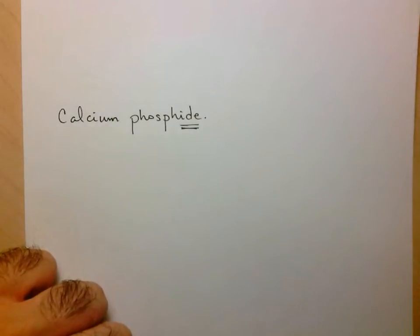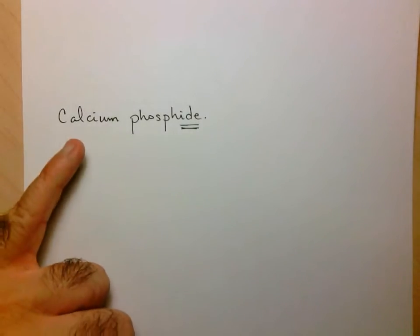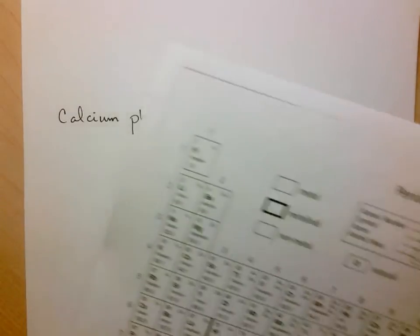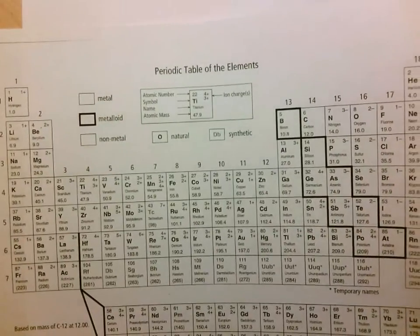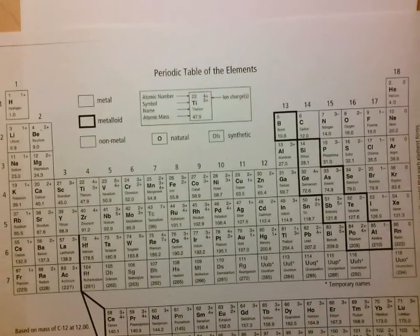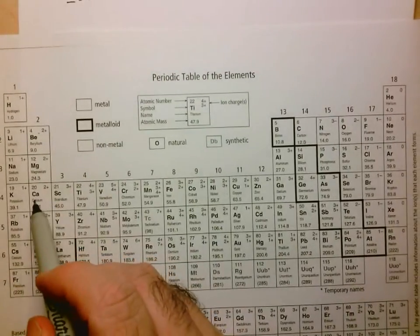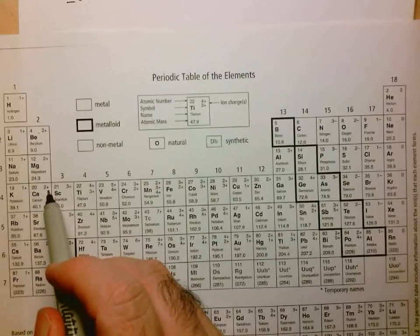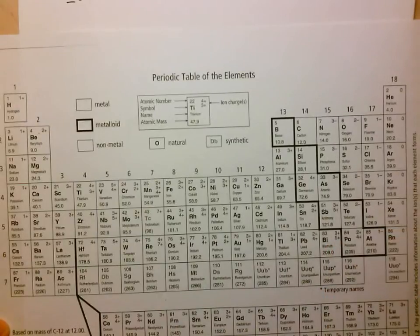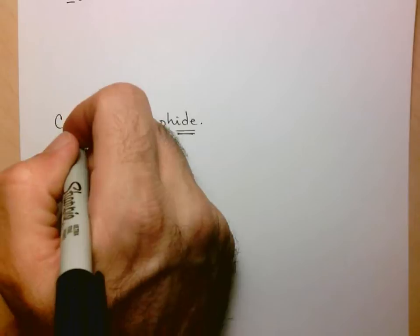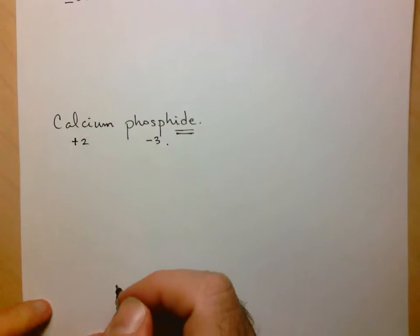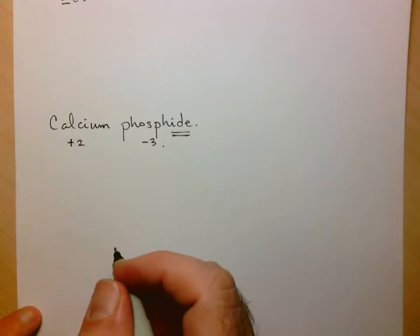Now we need to determine how many of each we need. The name doesn't tell us this, so we go to our periodic table. The first thing we look at is the charges. We look at calcium and see the charge is plus two. Then we look at phosphorus and see the charge is minus three. I suggest you indicate these under your names: plus two, minus three.